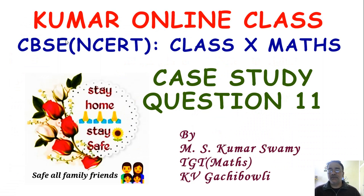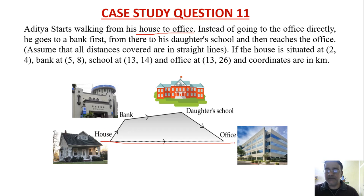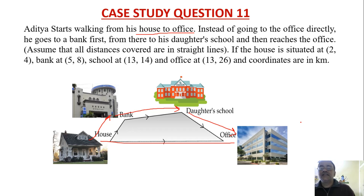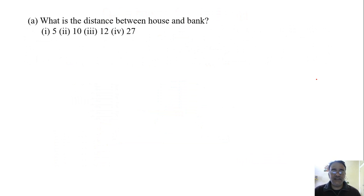We are going to start case study question number 11, which is based on coordinate geometry. This is a very good question. Aditya starts walking from his house to office - instead of going directly, he goes to the bank first, then daughter's school, then office. Assume all distances covered are in straight lines. The house is at (2,4), bank at (5,8), school at (13,14), and office at (13,26). Coordinates are in kilometers.